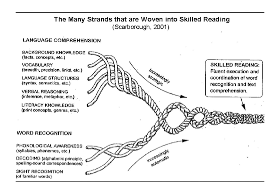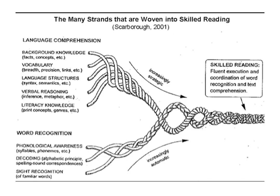Word recognition is something different from comprehension — it involves phonological awareness, decoding, and sight recognition. If a student has good language skills but struggles with phonological awareness and decoding, they may struggle so much to read individual words that they have no ability to process comprehension. If a student is having language comprehension issues, each of these strands must be explored to determine whether there's a problem that needs to be addressed. Only then do we get to skilled reading.